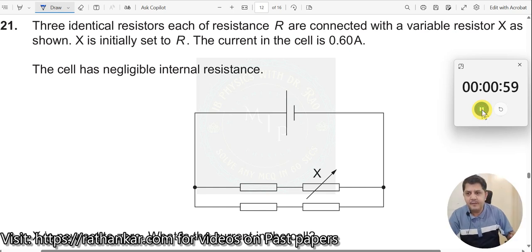Question number 21. Three identical resistors each of resistance R are connected by a variable resistor X. These are all resistance R and this is the variable resistor X. X is initially set to R, X equals R.